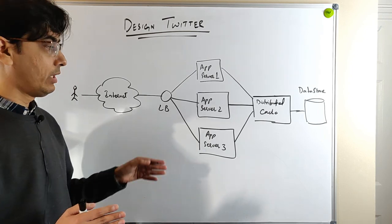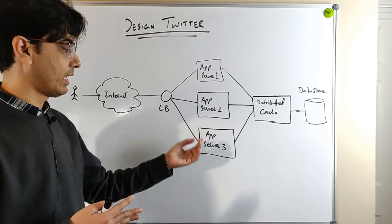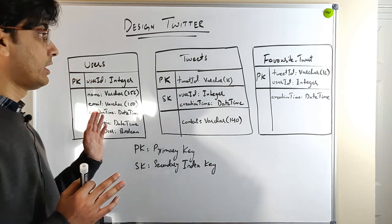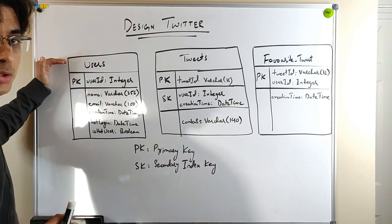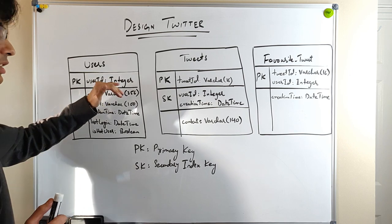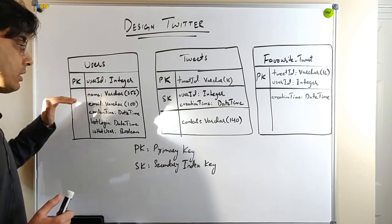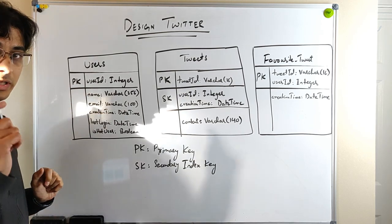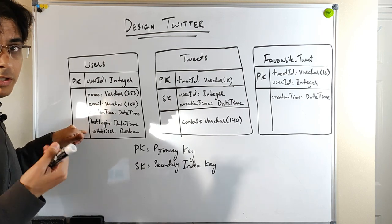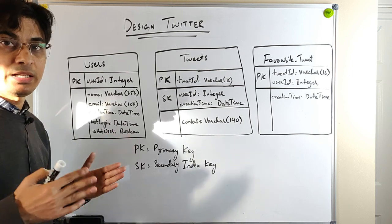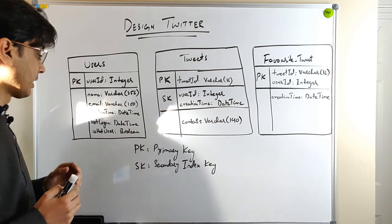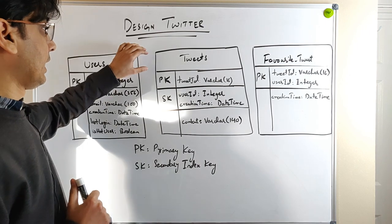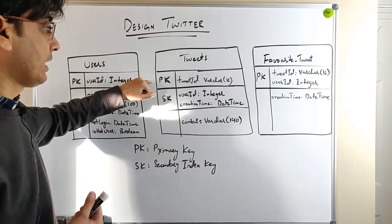This architecture is scalable — we start with three application servers, and as load increases we can introduce more. Now let's discuss the database schema used by the tweet service. There are three tables: the users table with primary key user ID (integer), plus fields like user name, email, creation time, last login time, and an important 'is hot user' field — a hot user is a celebrity with a million followers, used later in the fanout service.